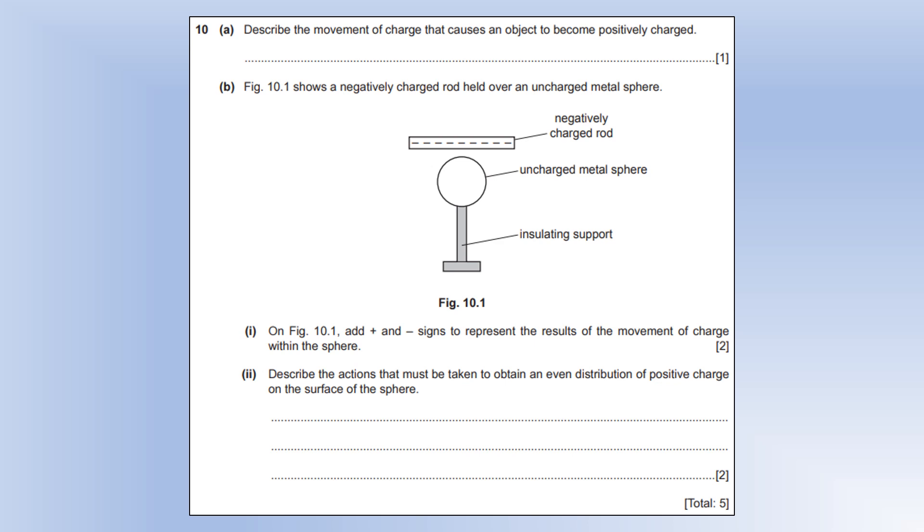Describe the movement of charge that causes an object to become positively charged. Electrons must be removed from it if it's become positive. The diagram shows a negatively charged rod held over an uncharged metal sphere. Add signs to represent the movement of charge within the sphere. What's going to happen is electrons are going to be repelled from the top surface by the electrons in the rod, and that's going to leave the top positive and the bottom negative.